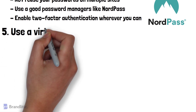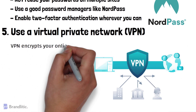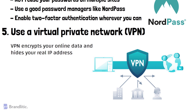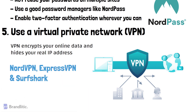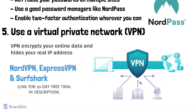5. Use a Virtual Private Network. Connecting to a VPN encrypts your online data and hides your real IP address, so snoopers won't be able to sniff your private information and you can enjoy safe online browsing. With a good VPN, you can even feel secure on a public network. When choosing a VPN service, pick one that follows a strict no-logs policy, such as NordVPN, ExpressVPN, or Surfshark. There's a link in the description below for a free 30-day trial for each of these services.